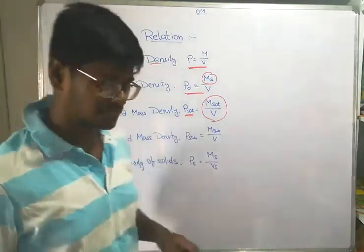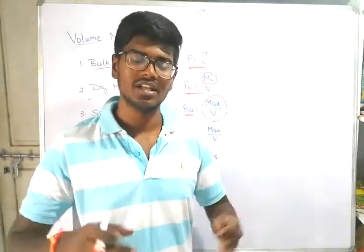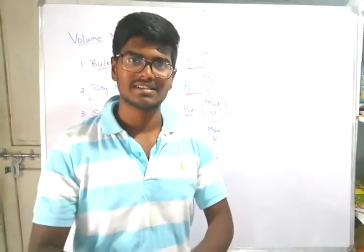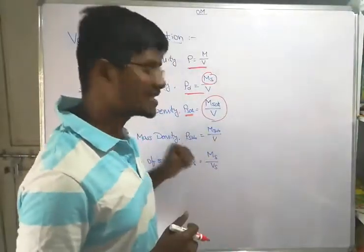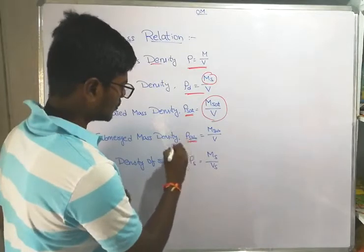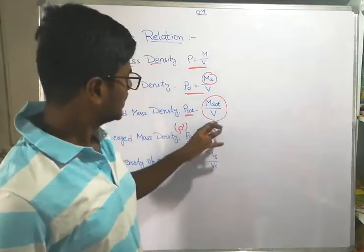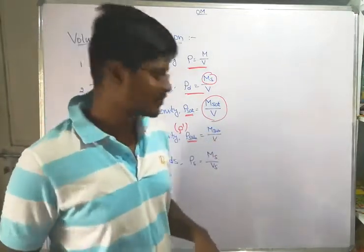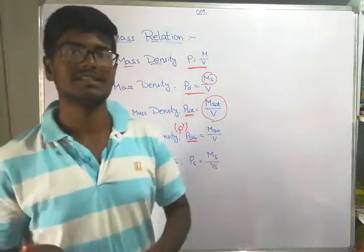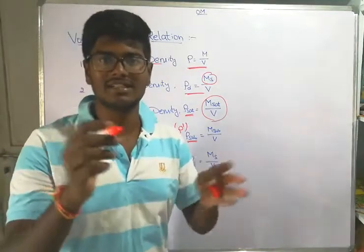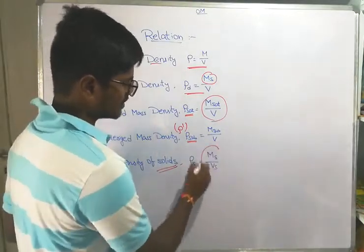Next is submerged mass density, also denoted as rho-dash or rho-sub. It is the submerged mass divided by the total volume. Finally, mass density of solids — where we consider only the solid particles — is the mass of solids divided by the volume of solids (Vs).